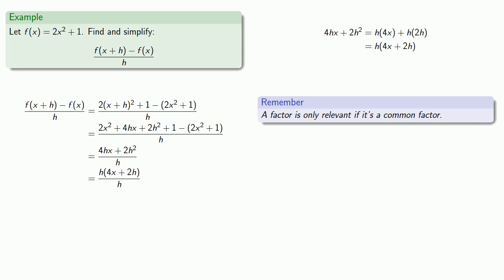And now I have a common factor of h in numerator and denominator. I can remove that common factor, leaving me with 4x + 2h.